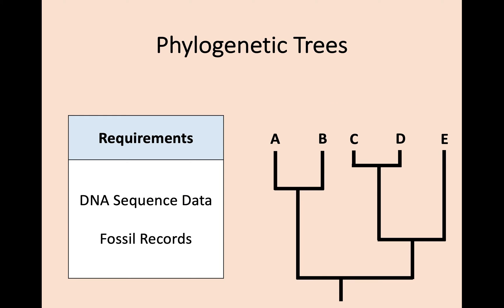One last point: in order to construct a phylogenetic tree, you need the DNA sequence data to compare. However, in order to put some sort of date on divergence, we use fossil records to estimate time. What we're going to look at in a moment is a more modern approach which is now being used to calculate times of divergence.